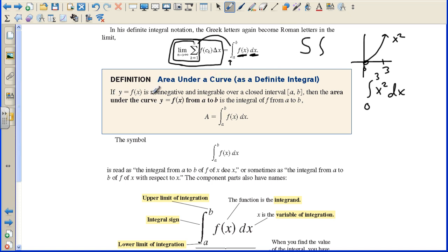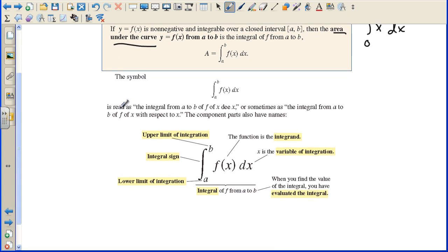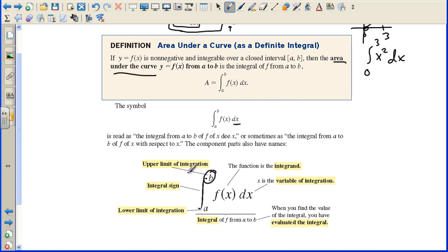Area under curve as a definite integral. If Y equals f of X is non-negative and integrable over a closed interval A to B, then the area under the curve is the integral of f from A to B. The symbol is read as the integral from A to B of f of X dX, or sometimes as the integral from A to B of f of X with respect to X. The component parts also have names. This value up here is the upper limit, the lower limit would be A. The function is the integrand, and X is the variable of integration. When you find the value of the integral, you have evaluated the integral.